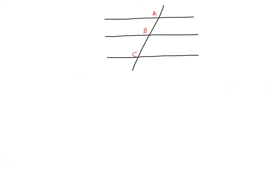We're going to start off by drawing three parallel lines and a transversal, and label each of the points of intersection with the three parallel lines as A, B and C. On our diagram we then mark in that the distance between A and B is equal to the distance between B and C.